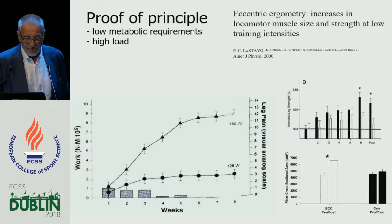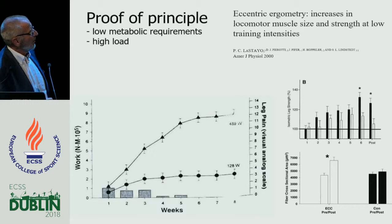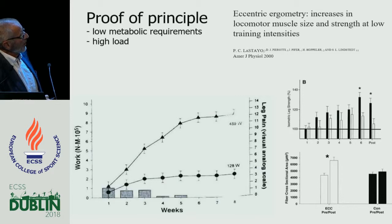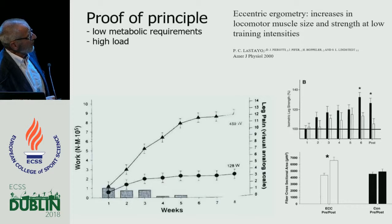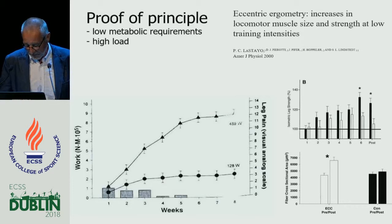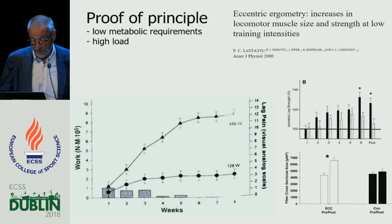In a proof of principle study, we had a group of young students who trained concentrically at 120 watts, while their colleagues worked at the same oxygen consumption — the same metabolic load — eccentrically. We could show that the group that trained eccentrically had a gain in muscle function, larger isometric strength, and larger muscle fiber size. This was a sort of proof of principle: you can gain muscle using these moderate load eccentric devices.